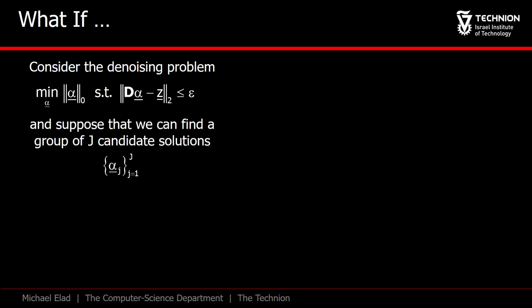Suppose that somehow we could find a set of J-candidate solutions all being feasible, that is, they obey the epsilon constraint. Also, all of them are rather sparse, with much less non-zeros than the dimension of the signal z.